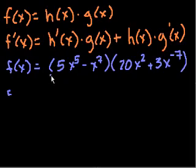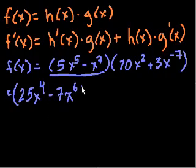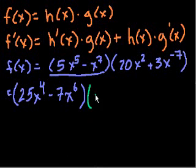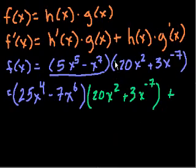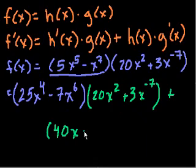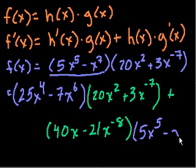The product rule says: take the derivative of the first expression, or h of x. The derivative of that is 25x to the fourth minus 7x to the sixth. And we multiply it times this second expression: 20x squared plus 3x to the minus 7. And then to that, we add the derivative of the second function, which is 40x minus 21x to the minus 8, times this first function.